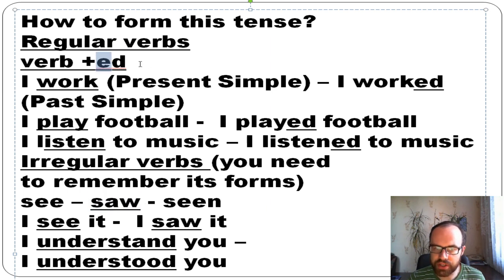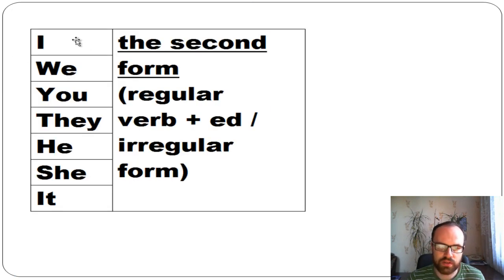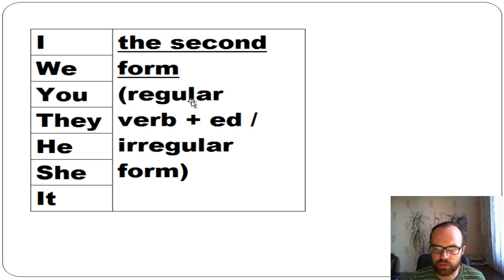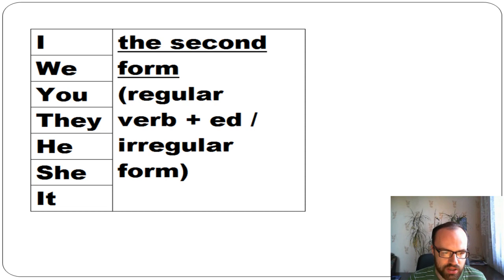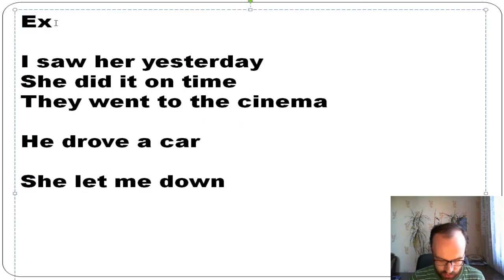To form past simple, use the subject and then the second form of the verb. For regular verbs: verb + -ed. For irregular verbs: use the irregular past form. Remember this rule — it's very important.